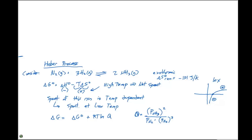In order to get a small Q, we can do one of three things: decrease the partial pressure of NH₃, increase the partial pressure of N₂, or increase the partial pressure of H₂. All three of these effects influence ln Q, which in turn influences what our overall ΔG will be.